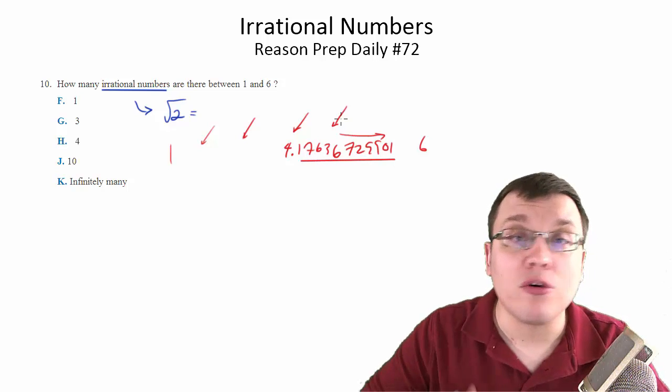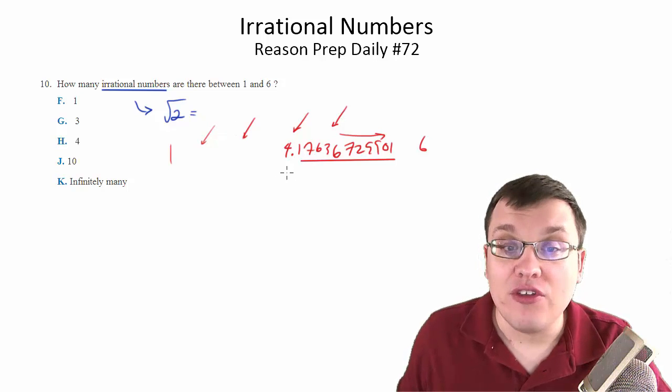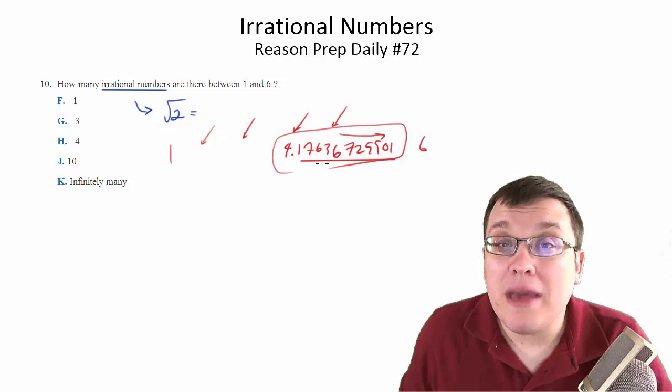This decimal can just go on forever with varying numbers. There's no repeating in the decimal at all. And this would be an irrational number. And I can just make this arbitrarily.